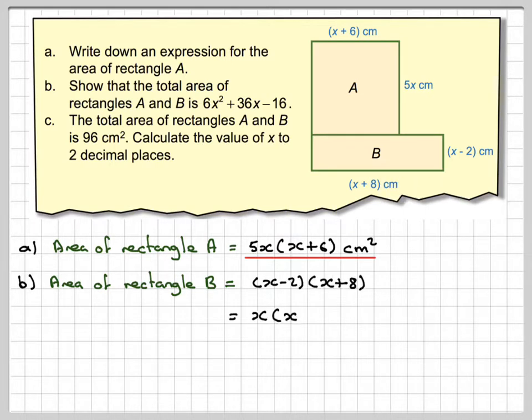We need to expand that. x times x is x², x times 8 is 8x, -2 times x is -2x, -2 times 8 is -16.